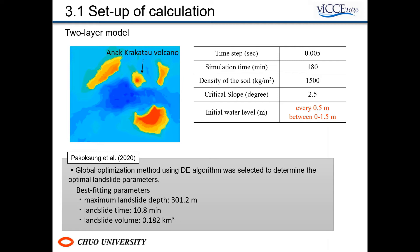Regarding the mass collapse, Pakofsen et al. applied the global optimization method using the DE algorithm to the two-layer model and determined the optimal landslide parameters. In the present study, we used the best-fit parameters derived by Pakofsen et al.